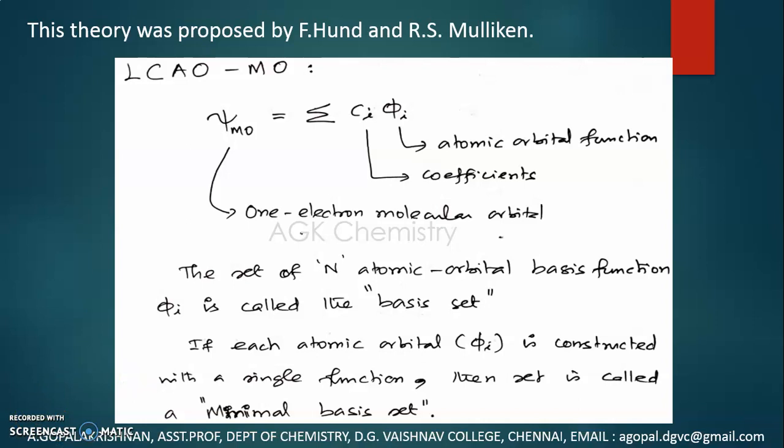In the variation method, we have to follow certain steps. First, we should guess a wave function for the molecular orbital. Then using that trial wave function, we should calculate the expectation energy. Then we should compare the calculated energy with the experimental energy available for the system. If the two values match, if they are very close, then the trial wave function can be considered as the wave function for the system.